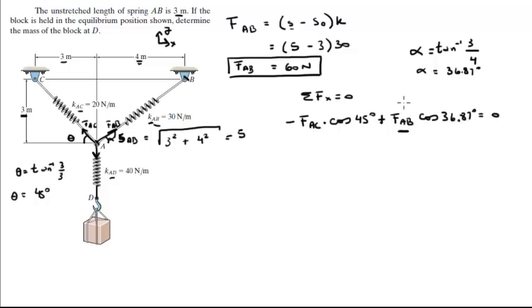But we already have FAB. We're going to plug in 60 right here and solve for FAC. And some basic algebra will tell us that FAC is equal to 67.9 newtons.